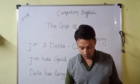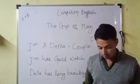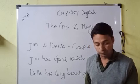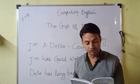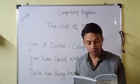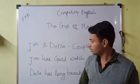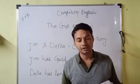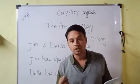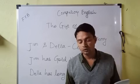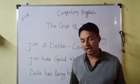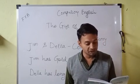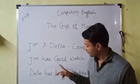Now let us see what happens next. Suddenly she whirled from the window and stood before the glass. Her eyes were shining brilliantly but her face had lost its color. Within 20 seconds, rapidly she pulled down her hair and let it fall to its full length. Now there were two possessions of Jim and Della in which they both took mighty pride.